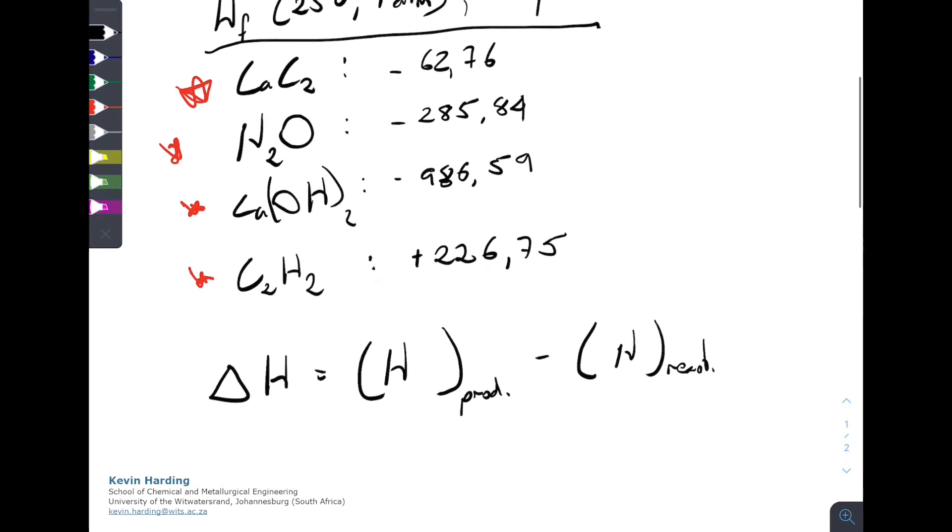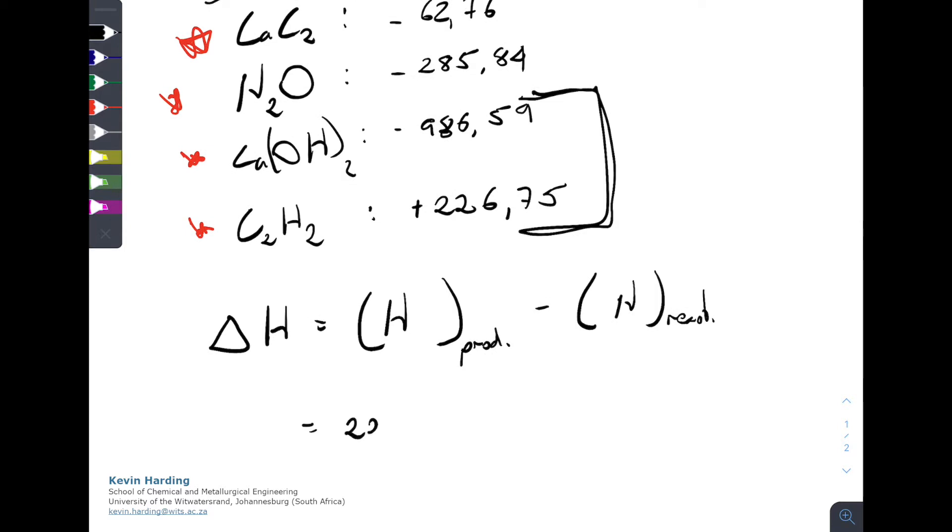In this instance, the products are these two on the bottom here. So that's simply going to be 226.75 plus the negative value. So let's rather write that as minus 986.59. So that's the enthalpy of the products.